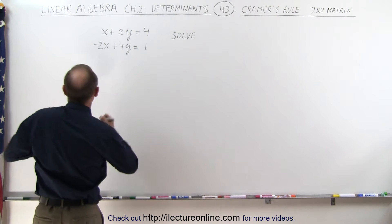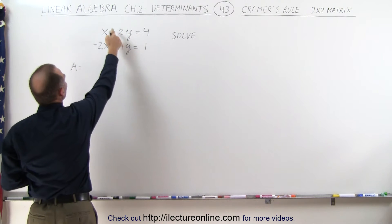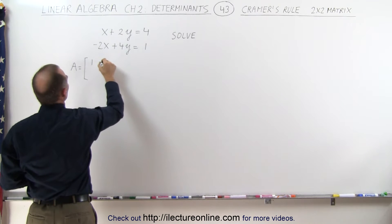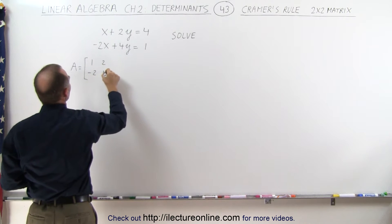The first matrix A is created by taking the coefficients of the two variables. So this is the first matrix: 1, 2, -2, and 4.